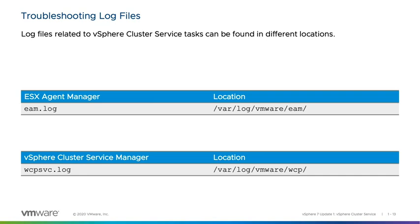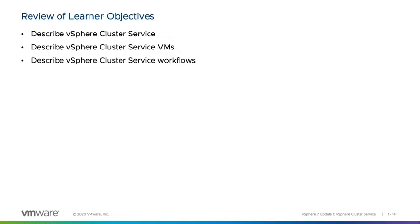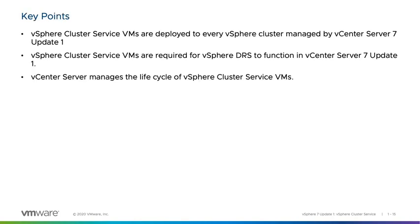At the end of this lesson, we've described vSphere Cluster Service, described vSphere Cluster Service VMs, and described vSphere Cluster Service workflows. The key points are: vCLS VMs are deployed to every vSphere cluster managed by vCenter Server 7 Update 1; vCLS VMs are required for DRS to function in vCenter Server 7 Update 1; and vCenter Server manages the lifecycle of the vCLS VMs. Thank you and I hope you've enjoyed this video.